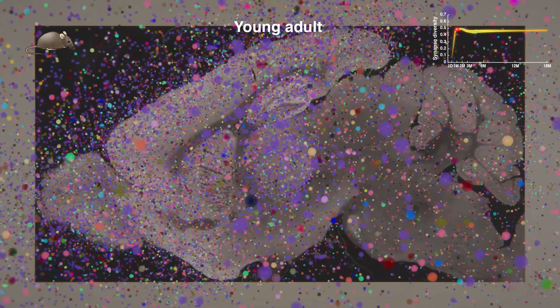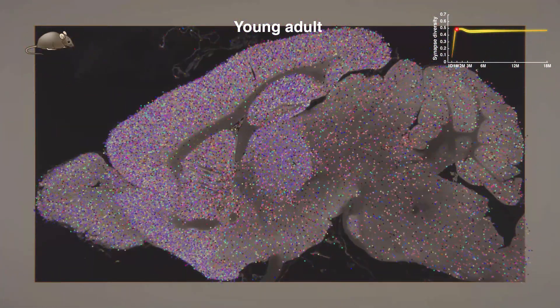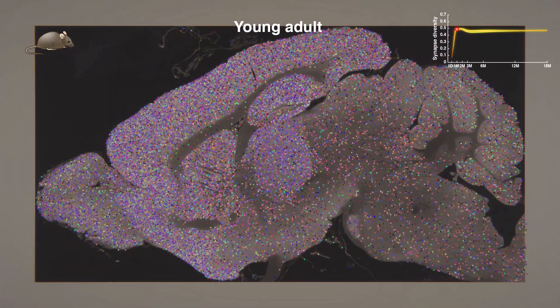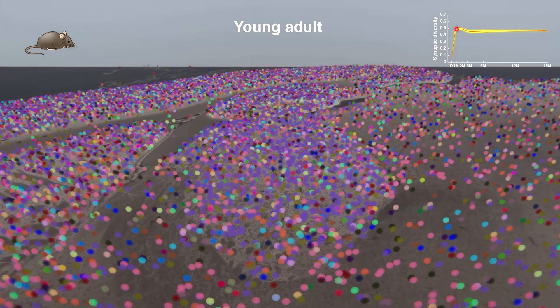In the young adult brain, there are even more synapses and diversity, and you can see how the different areas of the brain are populated with different types of flowers.